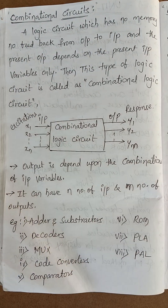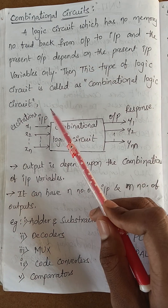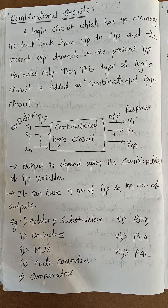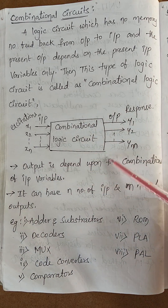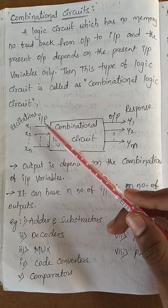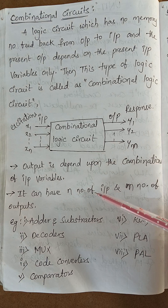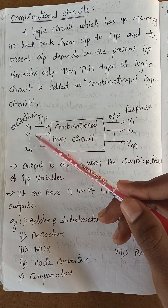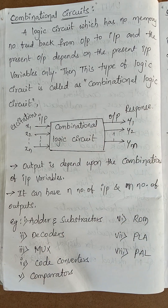In the combinational logic circuit, the input is saved and the output is saved. The output is dependent on the combination of input variables.